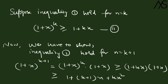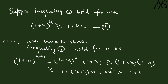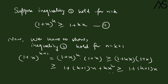Since x² is always non-negative, k·x² ≥ 0. Therefore, 1 + (k+1)x + k·x² ≥ 1 + (k+1)x. This means (1 + x)^(k+1) ≥ 1 + (k+1)x, so inequality 1 holds for n = k + 1.